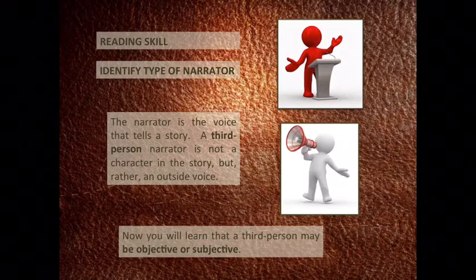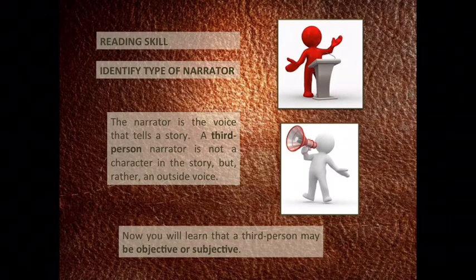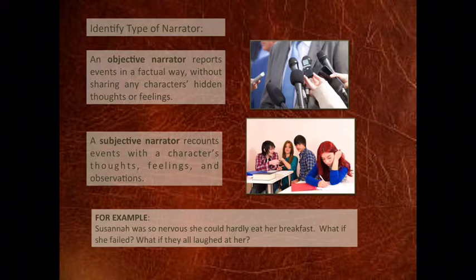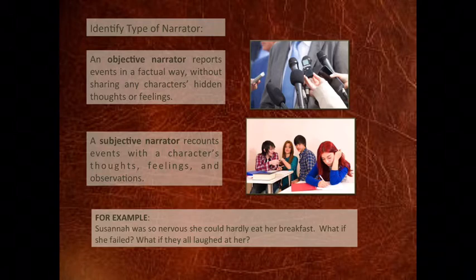Reading skill: Identify type of narrator. The narrator is the voice that tells the story. A third-person narrator is not a character in the story but rather an outside voice. A third-person narrator may be objective or subjective. An objective narrator reports events in a factual way without sharing any character's hidden thoughts or feelings. A subjective narrator recounts events with the character's thoughts, feelings, and observations. For example: 'Susanna was so nervous she could hardly eat her breakfast. What if she failed? What if they all laughed at her?' The narrator in this passage is subjective because the narrator reports the character's thoughts and feelings.